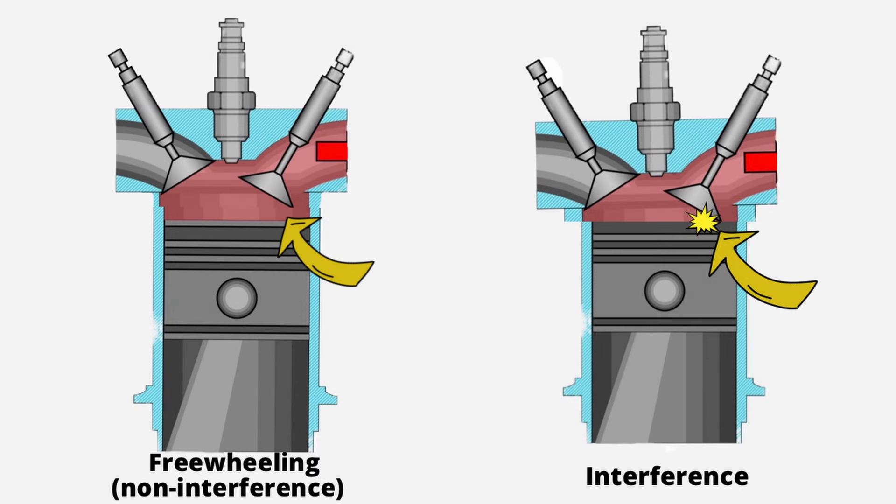It's important to know that if you have an interference engine and the belt breaks, it could have ruined the valves and pistons due to collateral damage. If you have a freewheeling engine, you don't have to worry since the pistons and the valves have enough space to not clash.